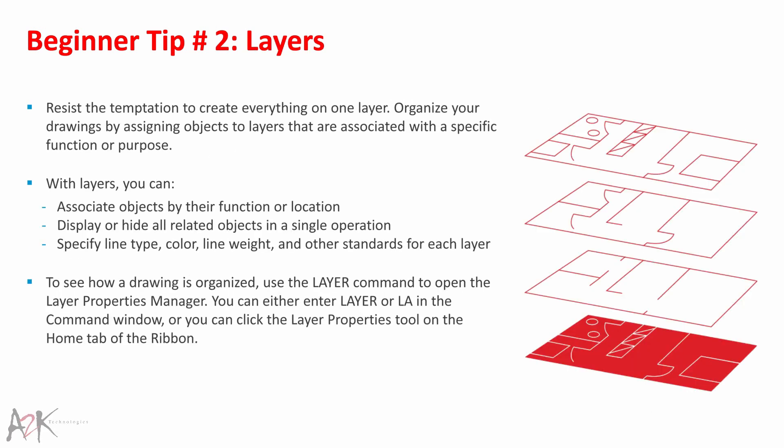Beginner Tip 2 – Layers. Resist the temptation to create everything on one layer. Organise your drawings by assigning objects to layers associated with a specific function or purpose — for example, walls on one layer and doors on another. With layers you can associate objects by function or location, display or hide all related objects in a single operation, and specify line type, colour, line weight and other standards for each layer.